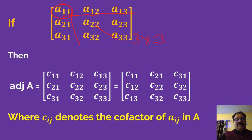Accordingly, we will calculate the cofactors and put them in a matrix, then take the transpose. The transpose of cofactor means this row is converted into column 1. So row 1 becomes column 1. Where Cij denotes the cofactor of Aij in A.